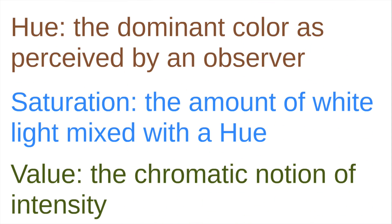We consider the Hue as the dominant color as perceived by an observer. For example, if we have a blue color, the Hue will point to this blue color. The Saturation is the amount of white light mixed with a Hue. And the Value is the chromatic notion of intensity — the lower the value, the more similar to black; the higher the value, the more similar to the color itself.